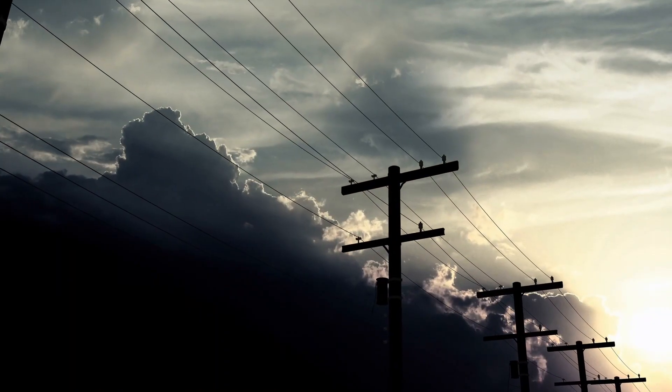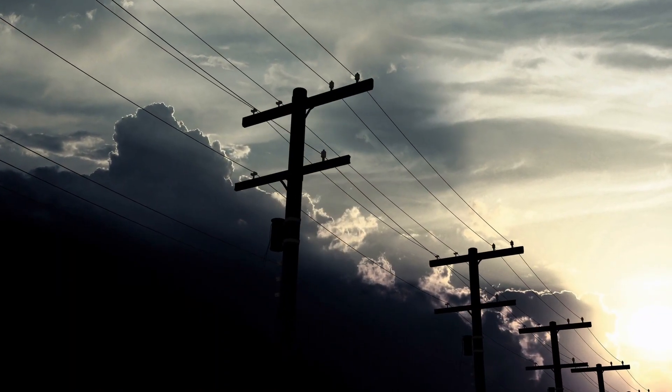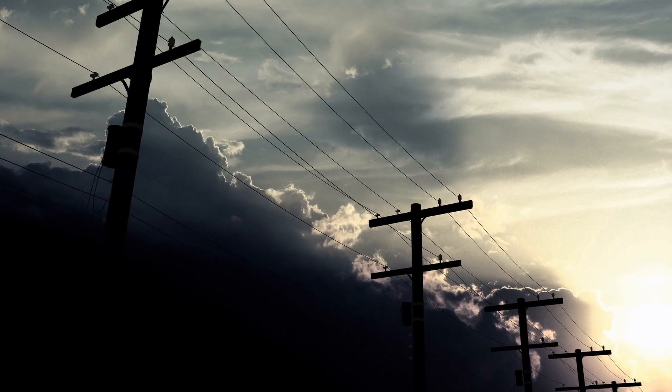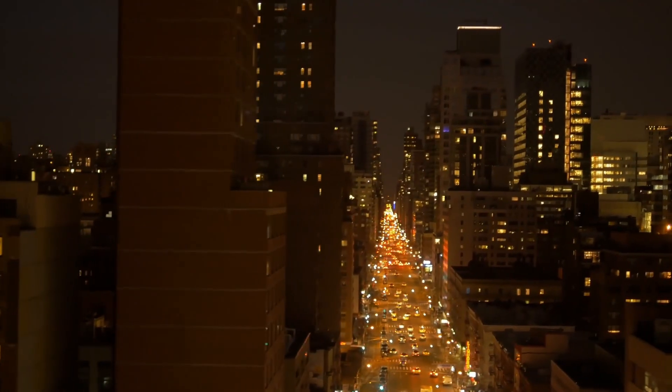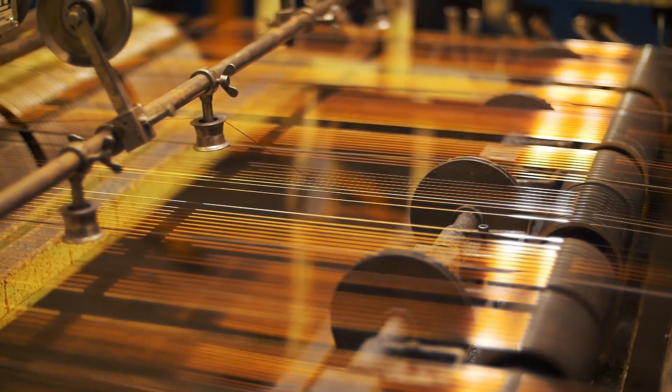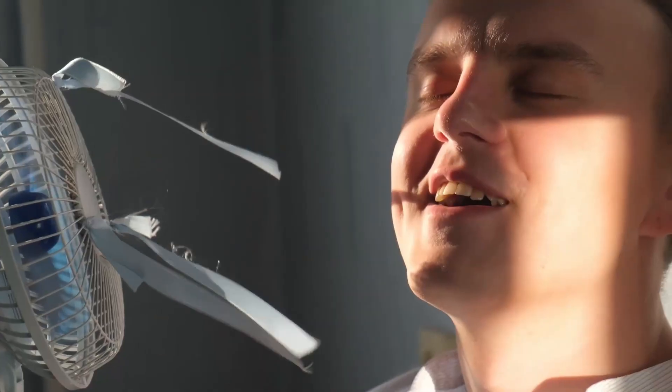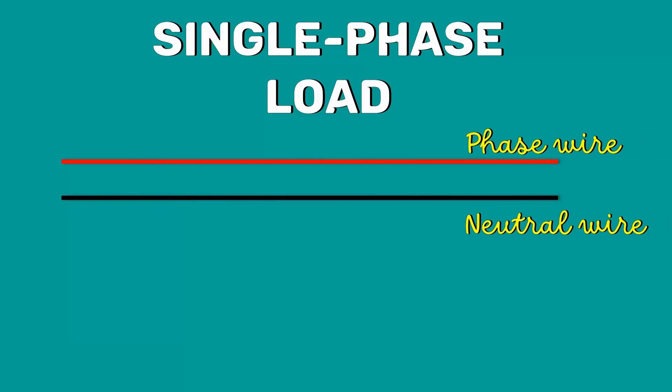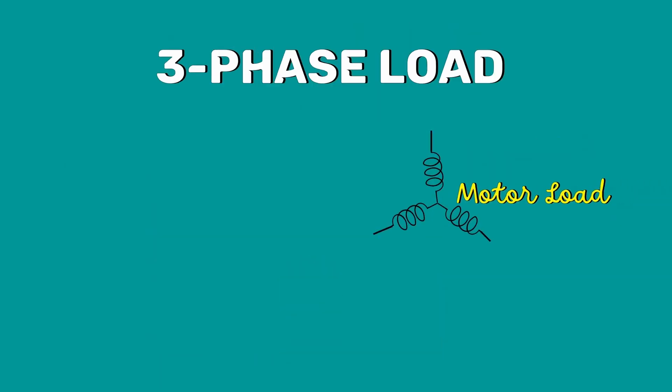The three phase four wire system is widely used for the distribution of electric power in commercial and industrial buildings. The single phase loads such as lights and fans are connected between any one phase line and the neutral line, while three phase loads such as motor loads are connected across three phase lines.